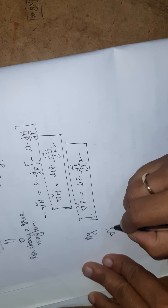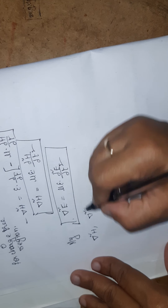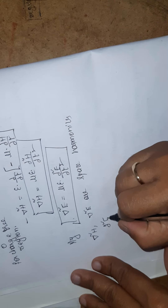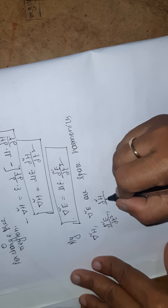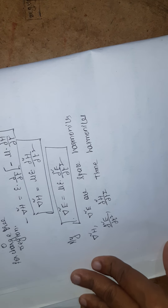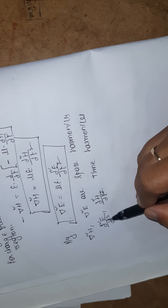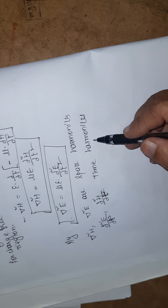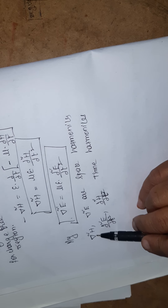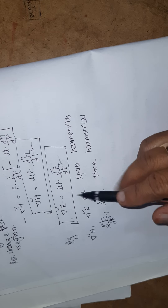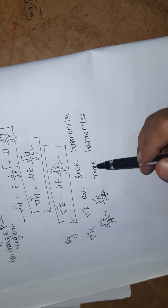Del squared H and del squared E are space harmonics, because del deals with space. The terms dou squared E by dou t squared and dou squared H by dou t squared are time harmonics, because differentiation is with respect to time. These are the EH field equations in free space, giving us equations for space harmonics and time harmonics. This is a very important derivation — exam questions may ask you to write the space harmonic and time harmonic equations or their relationship.